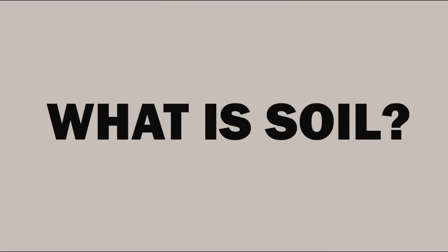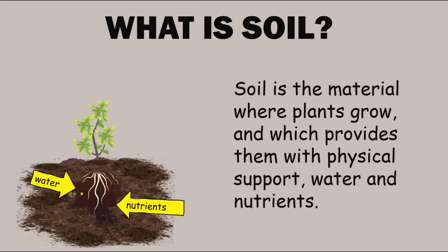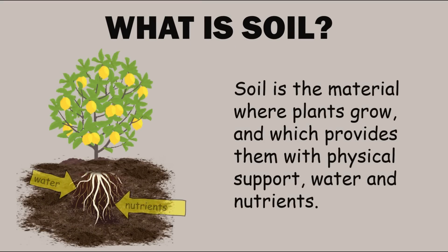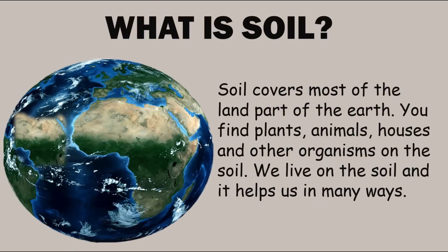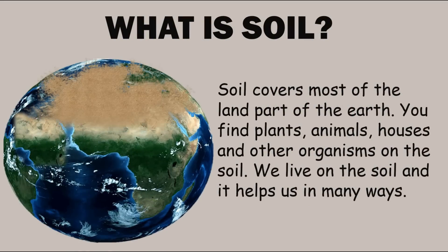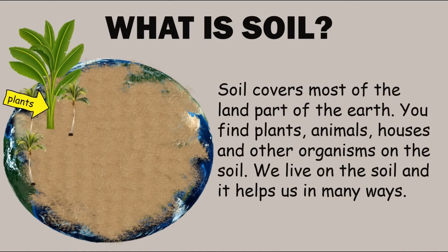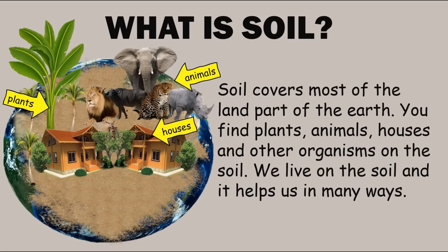What is soil? Soil is the material where plants grow and which provides them with physical support, water, and nutrients. Soil covers most of the land part of the earth. You find plants, animals, houses, and other organisms on the soil. We live on the soil and it helps us in many ways.